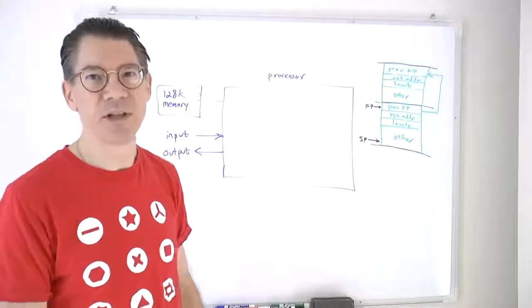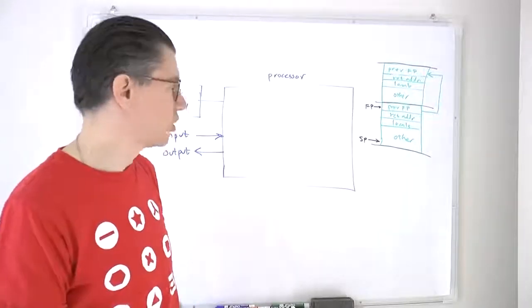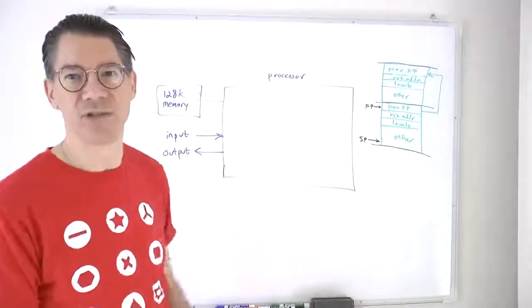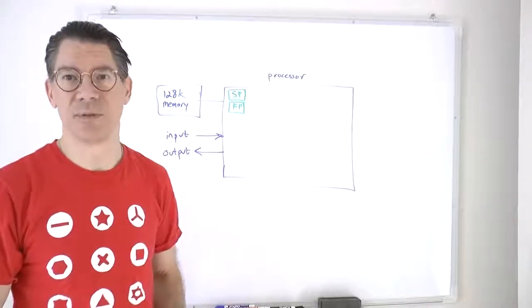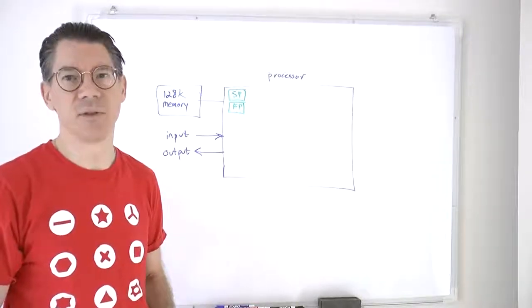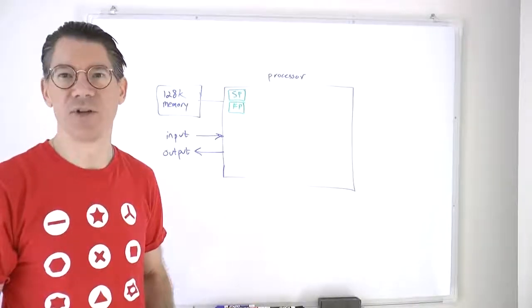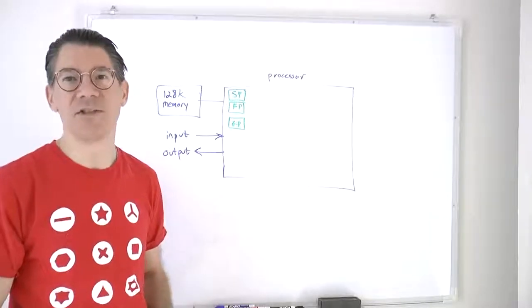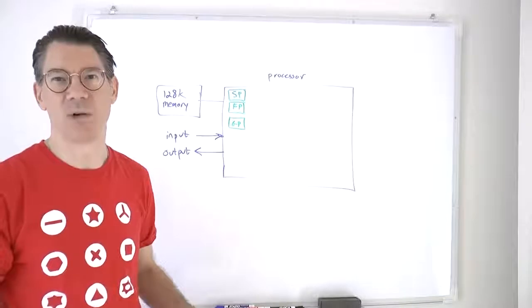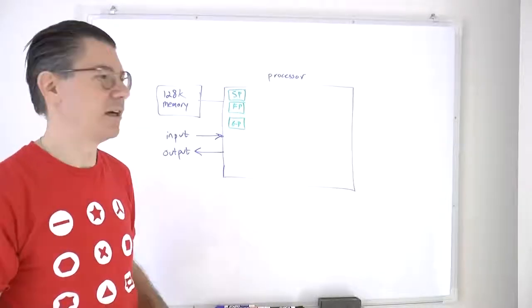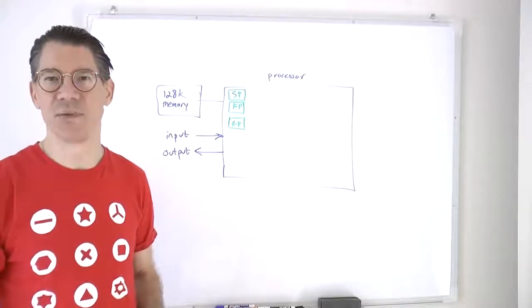It's clear we'll need a stack pointer and a frame pointer as registers in the processor. Because we also have global variables, it would be useful to know where they are stored — that will also go in a register. Finally, we need to know which instruction we're pointing to, so there is an instruction pointer, which also goes into a register in the processor.